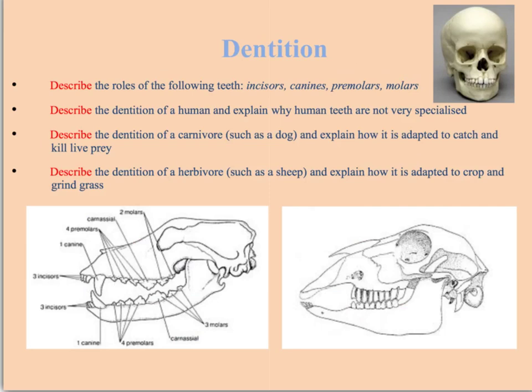Next we're going to discuss the other way in which animals are adapted to their diet — their dentition, or teeth. All animal teeth are based on the same basic layout. In the front we've got the incisors, which are thin and flat and designed for cutting through food. Next to those are the pointed canines. Behind those we've got the premolars and the molars, which have a ridge surface and are for grinding and crushing food. If you look at human teeth, they're not highly specialised — because we eat an omnivorous diet they need to deal with both plant matter and animal material.